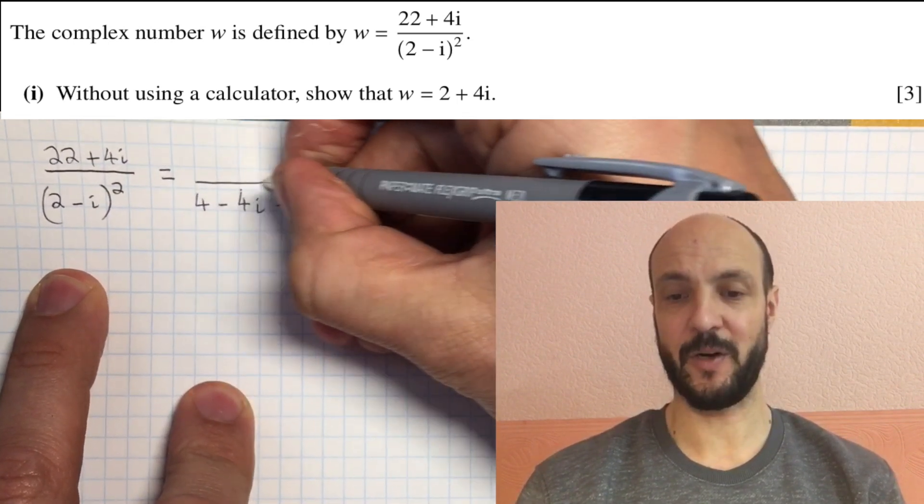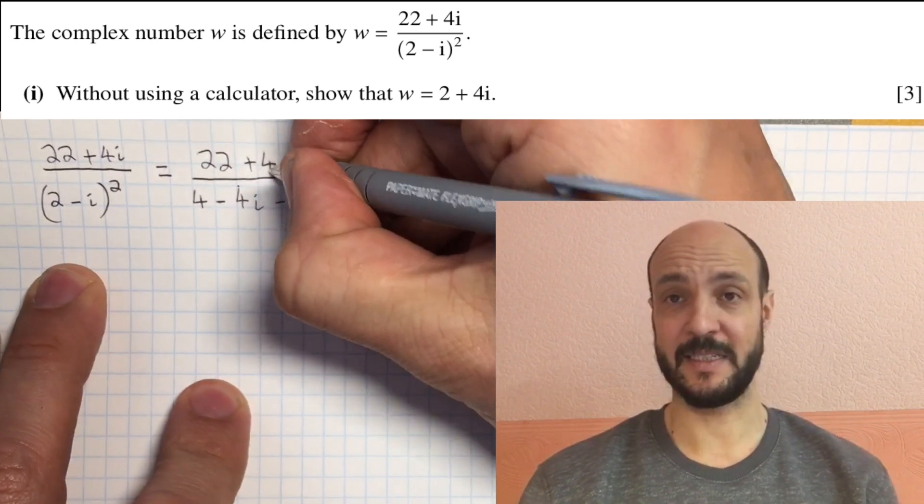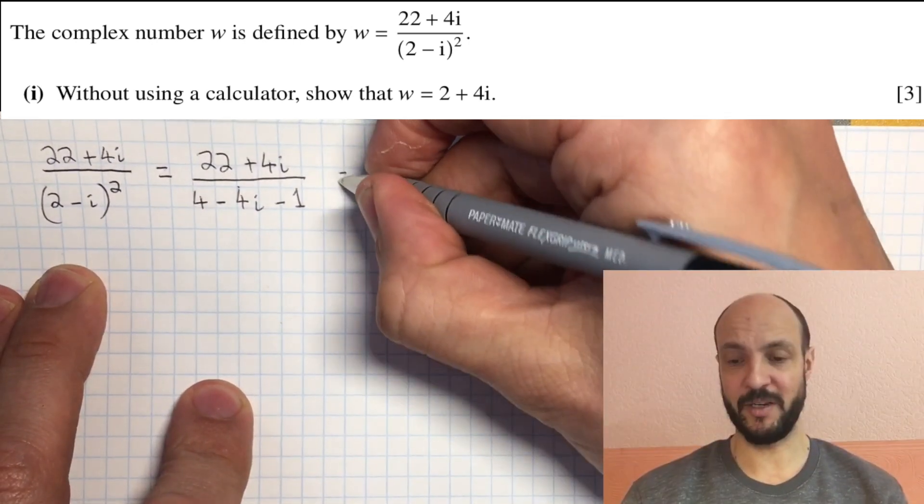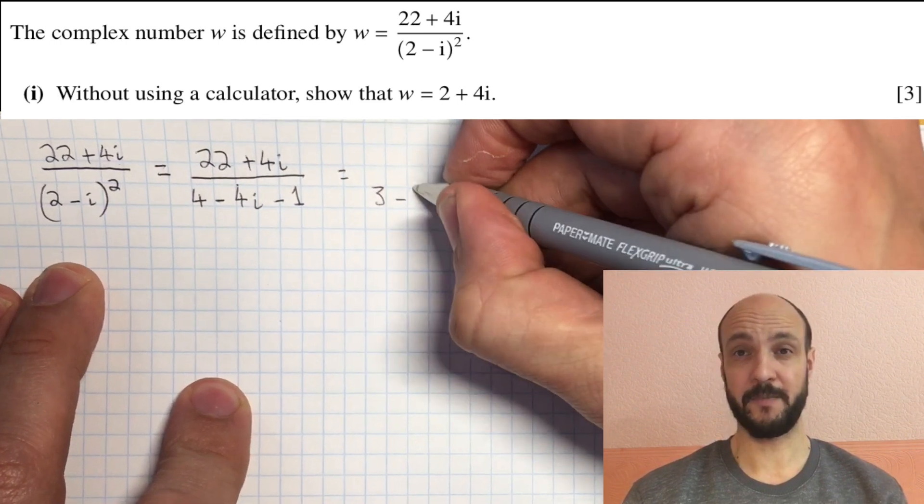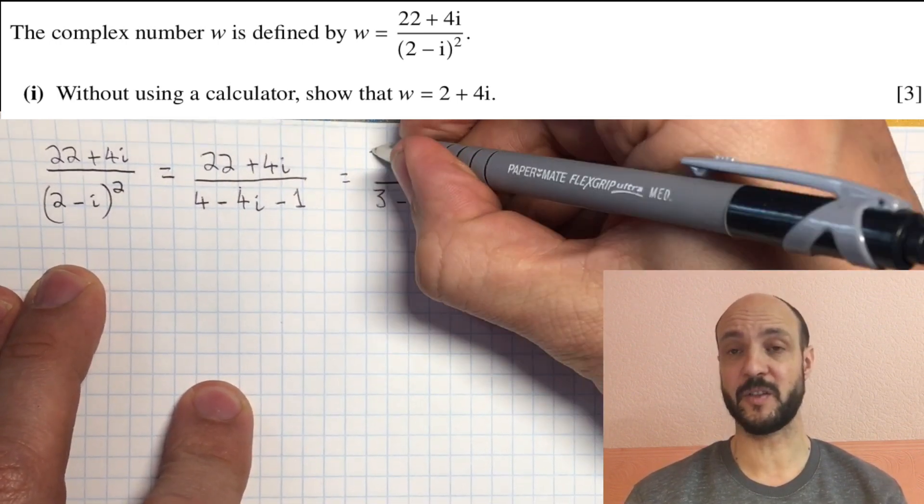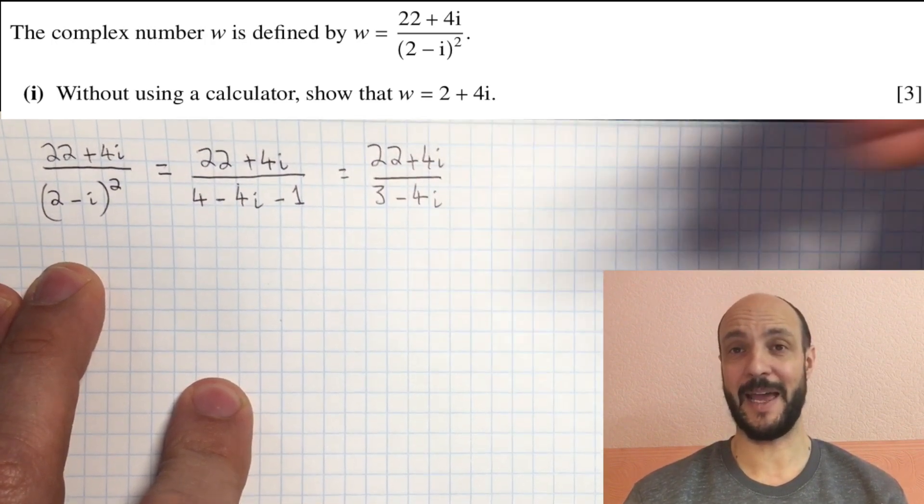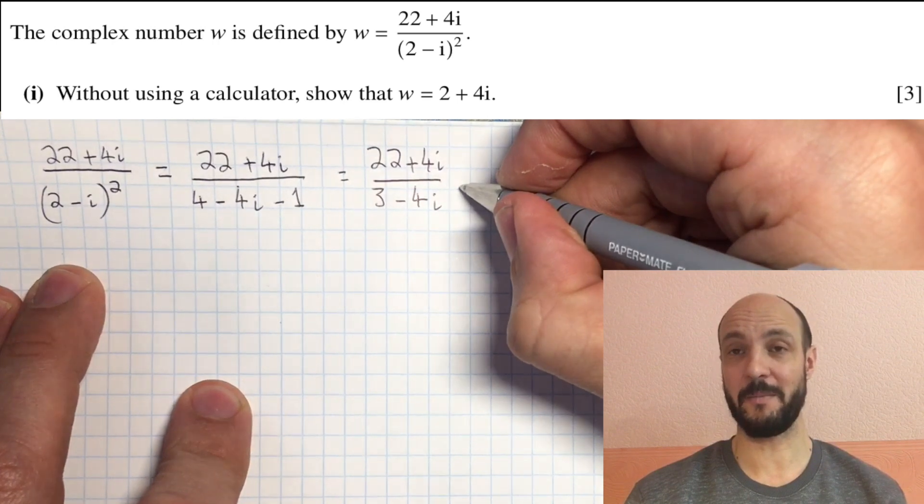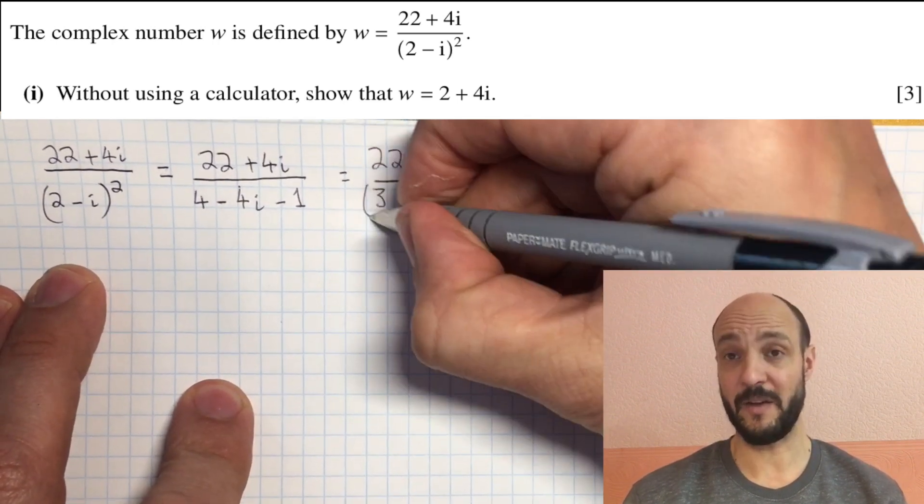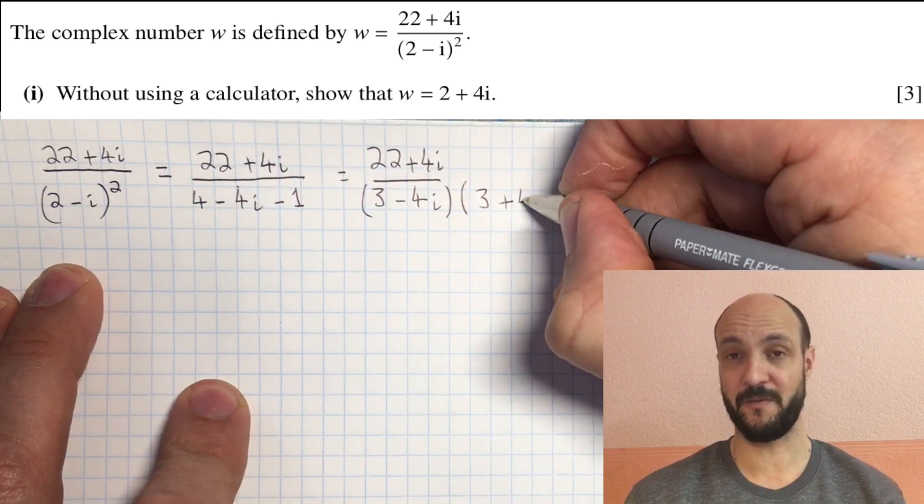So we have 22 plus 4i over 3 minus 4i. Then we have to ask ourselves, how are we going to get rid of this i on the bottom? And we use the simple technique using the formula for the difference of two squares. We know that a minus b times by a plus b equals a squared minus b squared. So we know we have to multiply the bottom of our fraction, in this case by 3 plus 4i.